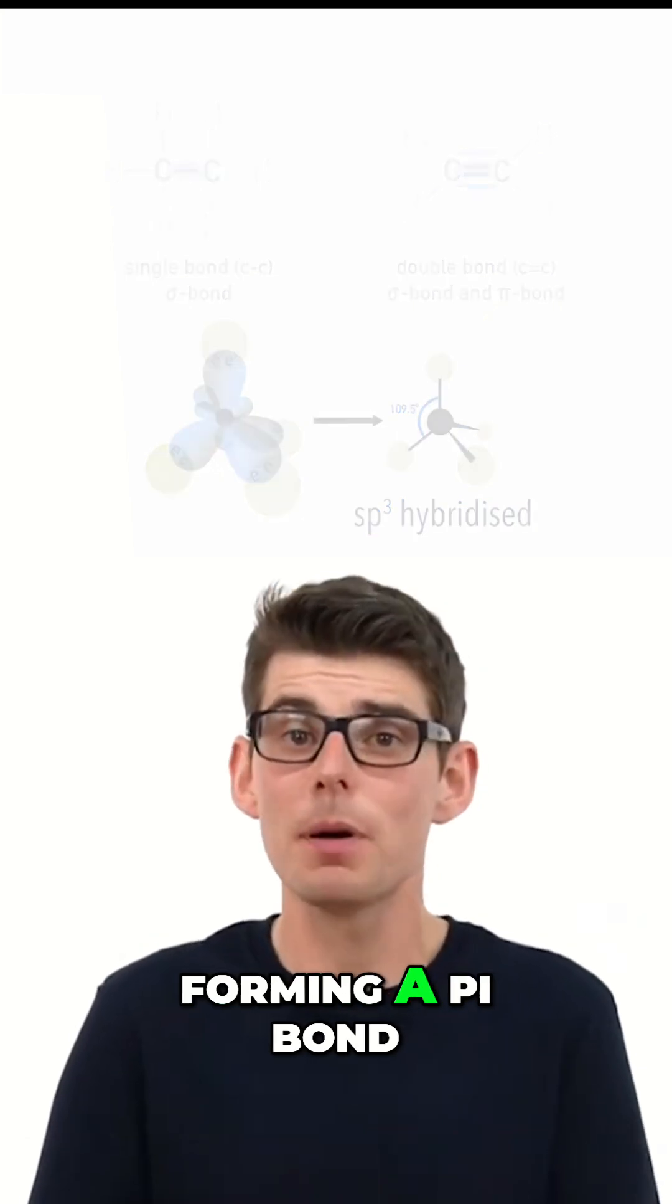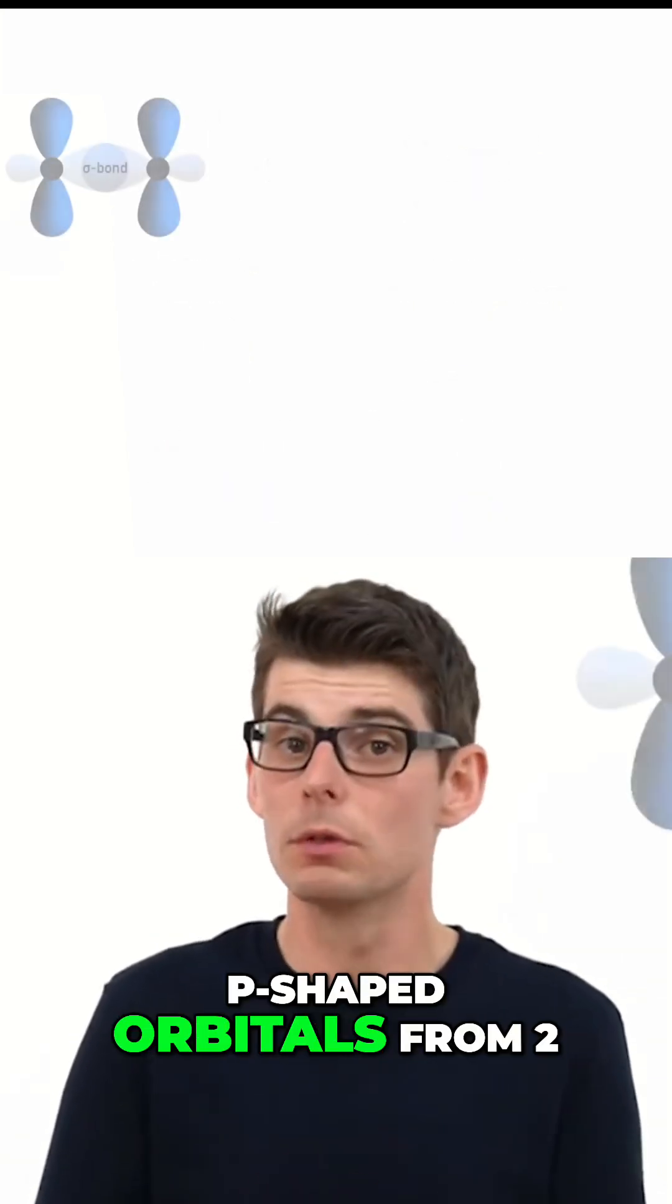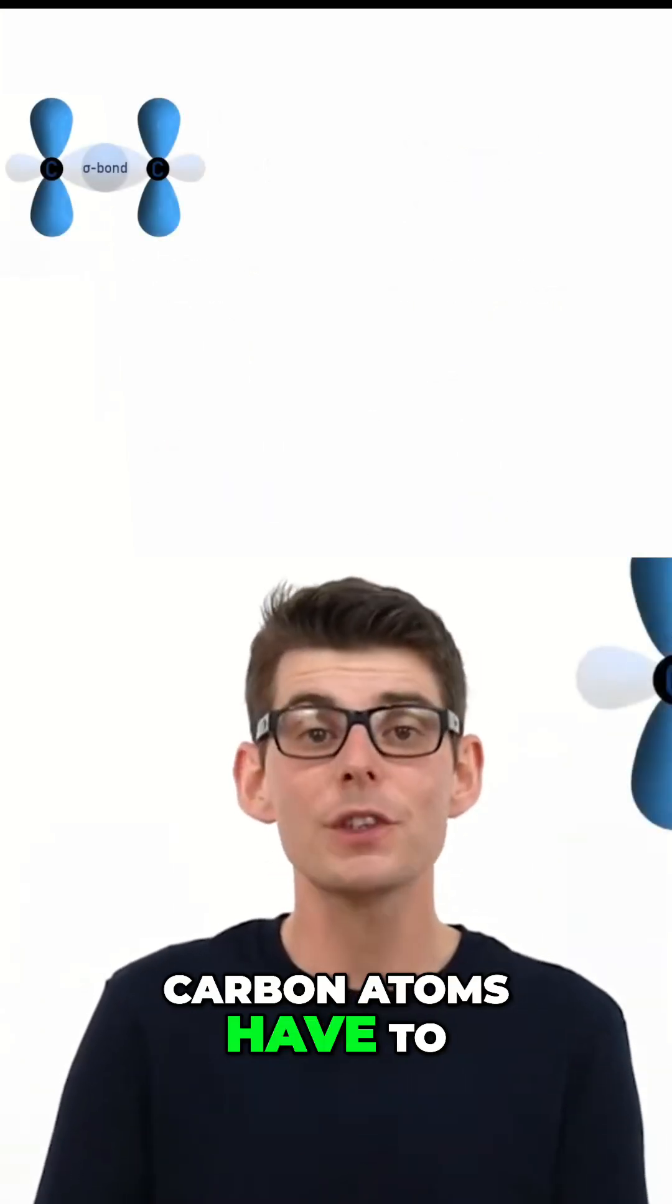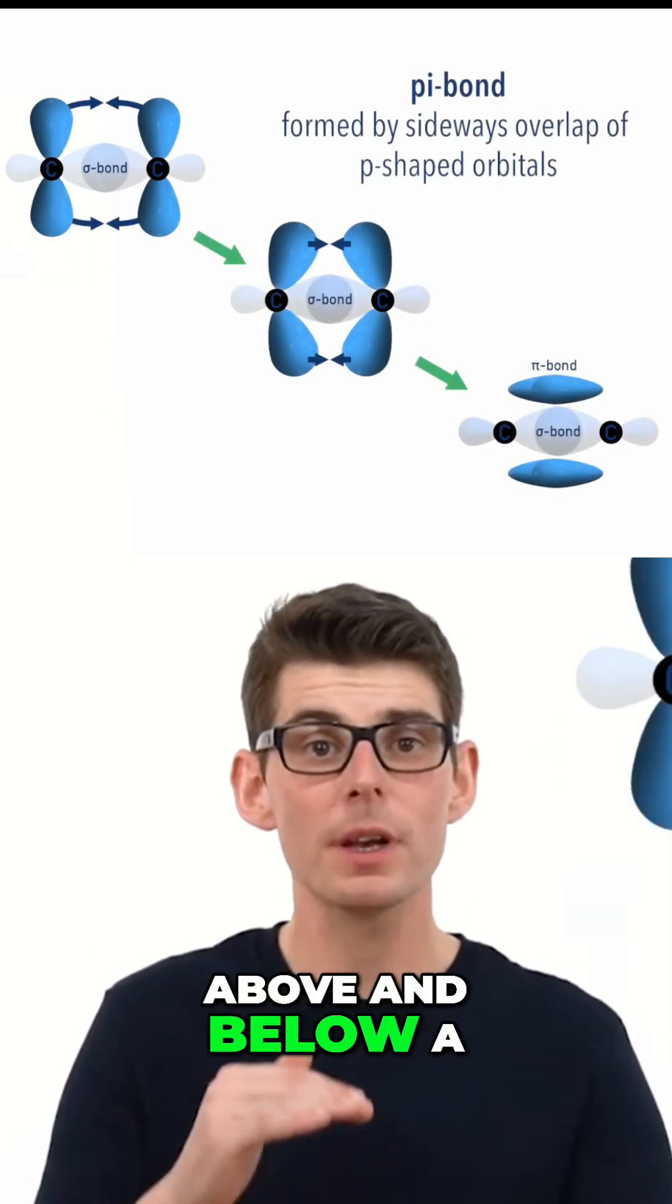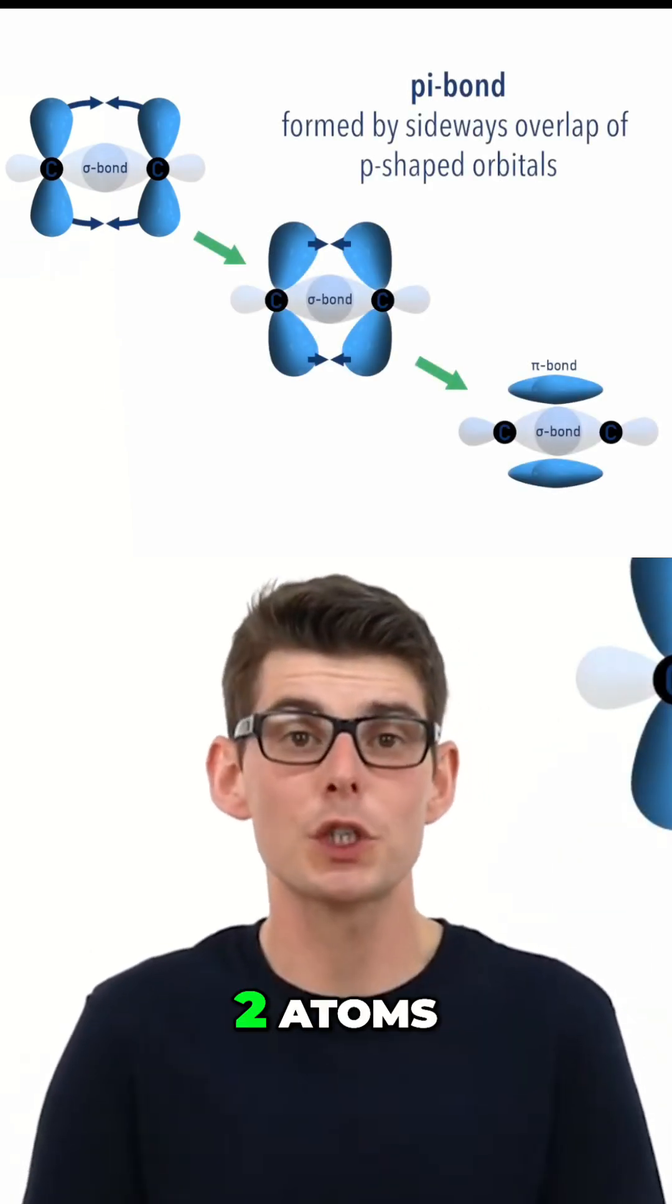This is because when forming a pi bond, p-shaped orbitals from two carbon atoms have to overlap sideways, above and below a sigma bond between the two atoms.